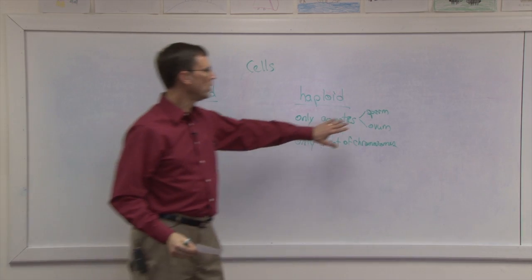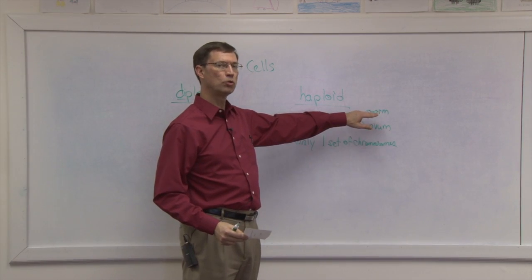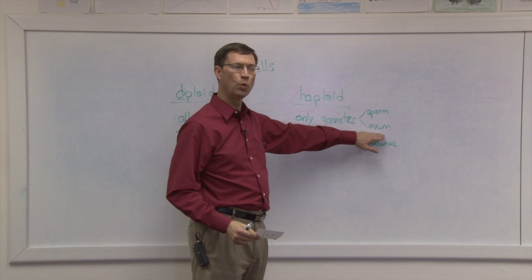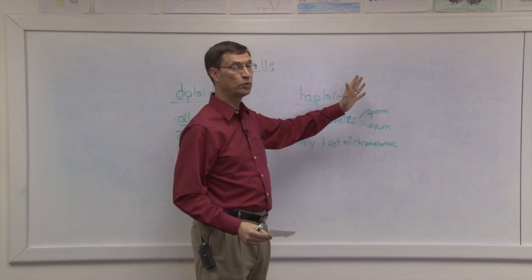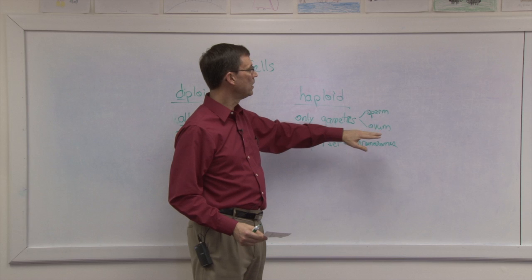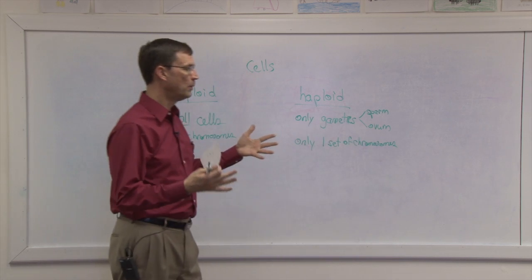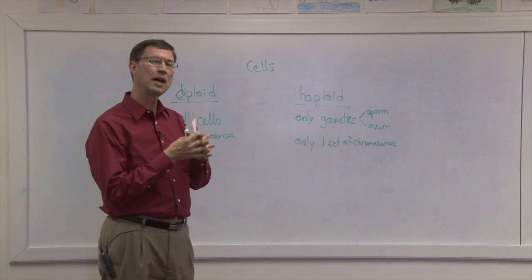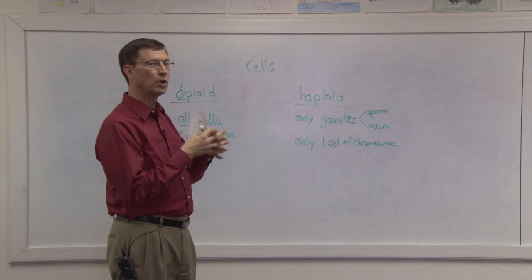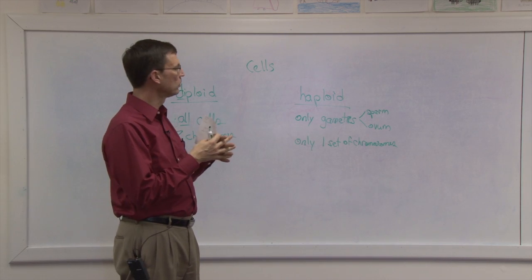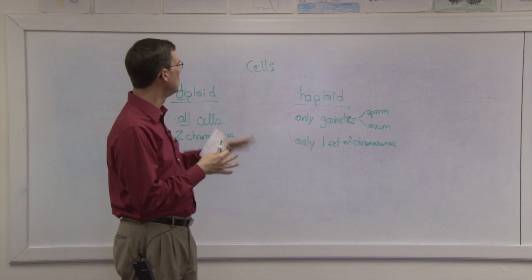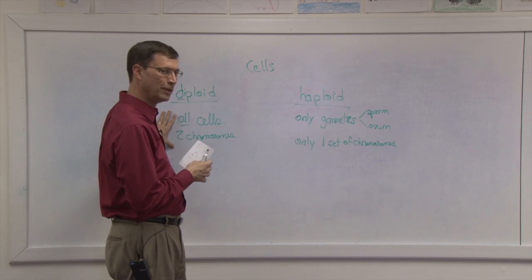So in the sperm, we only have 23 chromosomes. In the ovum, there are only 23 chromosomes. One gene still for every trait, but one coming from dad, one coming from mom. And then when they unite and form that zygote, the fertilized cell, then there will be the full set of all the chromosomes in that new diploid cell.